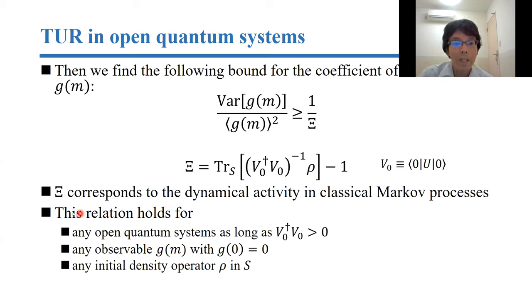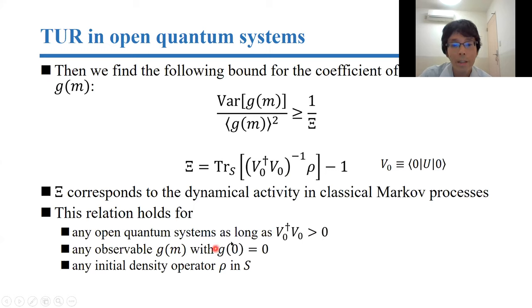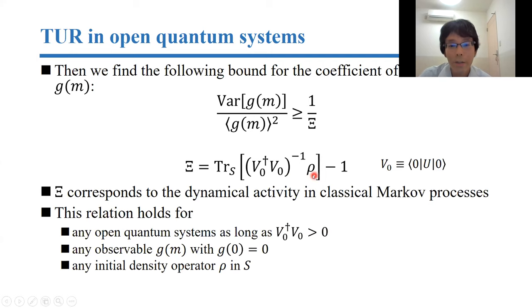I want to emphasize that this relation holds for any open quantum system, as long as this part is positive definite — because we have to calculate the inverse, this part should be positive definite. Any observable g_m with this condition, meaning any counting-type observable, can be used, and any initial density operator ρ in S, which can be either a pure state or mixed state.